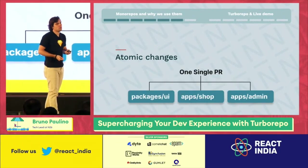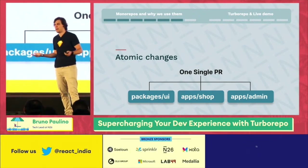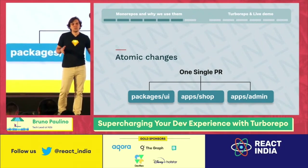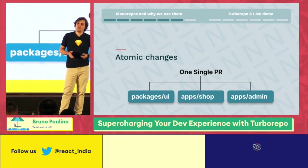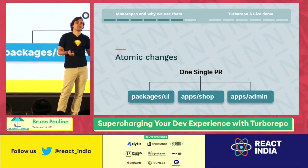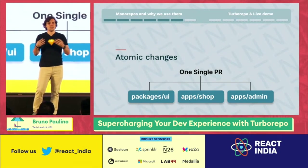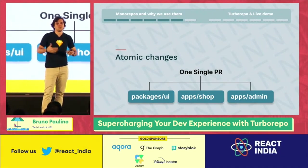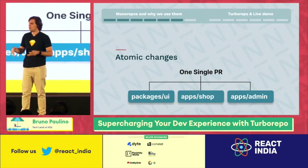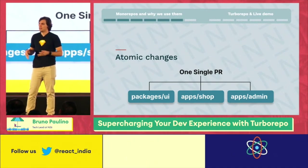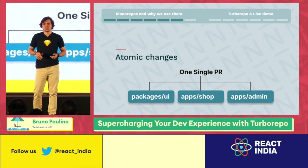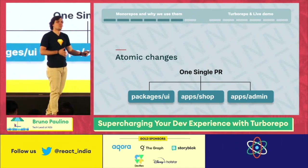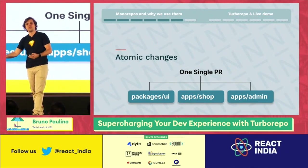Another cool thing about monorepos is atomic changes. If you have three different apps or packages that depend on each other, splitting them into separate repositories doesn't always work — some things go hand in hand. Think about a system with an order and a checkout: you can't break the payment without breaking the checkout process. If you have everything in the same repository, those teams are already communicating. If they break something, they'll see it in CI — all packages have their own test suites and pipelines, so issues surface and get fixed much more easily.